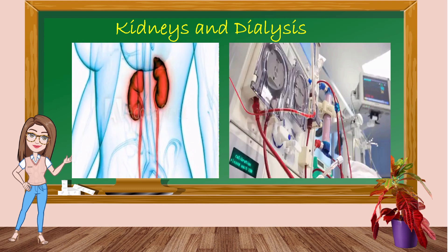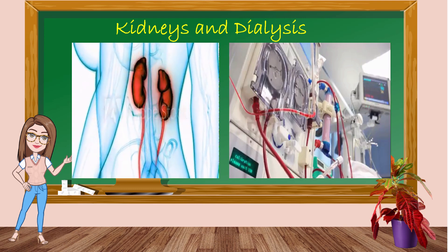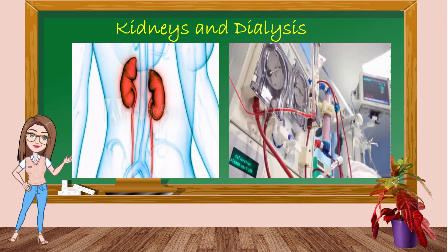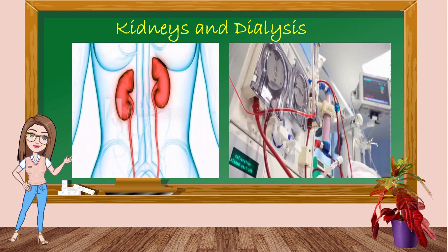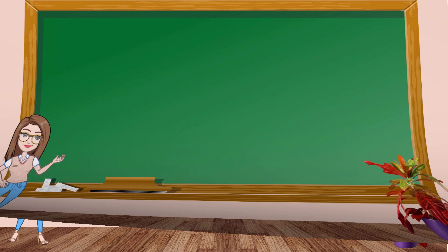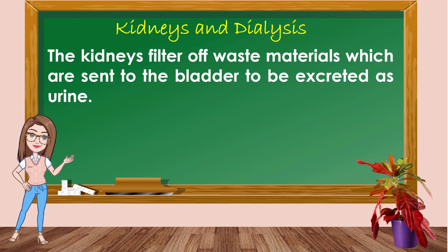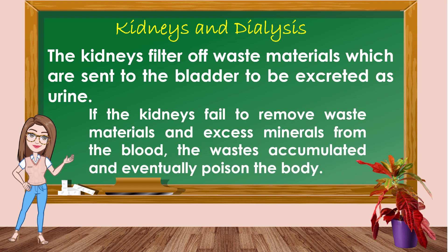Blood is a suspension — it has many fine minerals suspended in it, like sodium, potassium, and calcium. It also contains waste materials from cells. The kidneys filter out waste materials, which are sent to the bladder to be excreted as urine. If the kidneys fail to remove waste materials and excess minerals from the blood, the waste accumulates and eventually poisons the body.